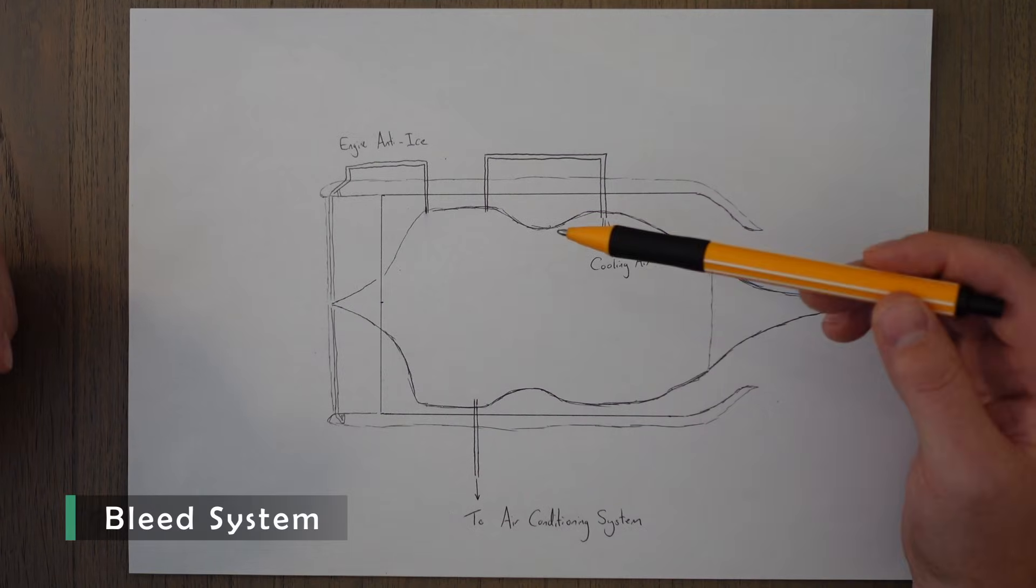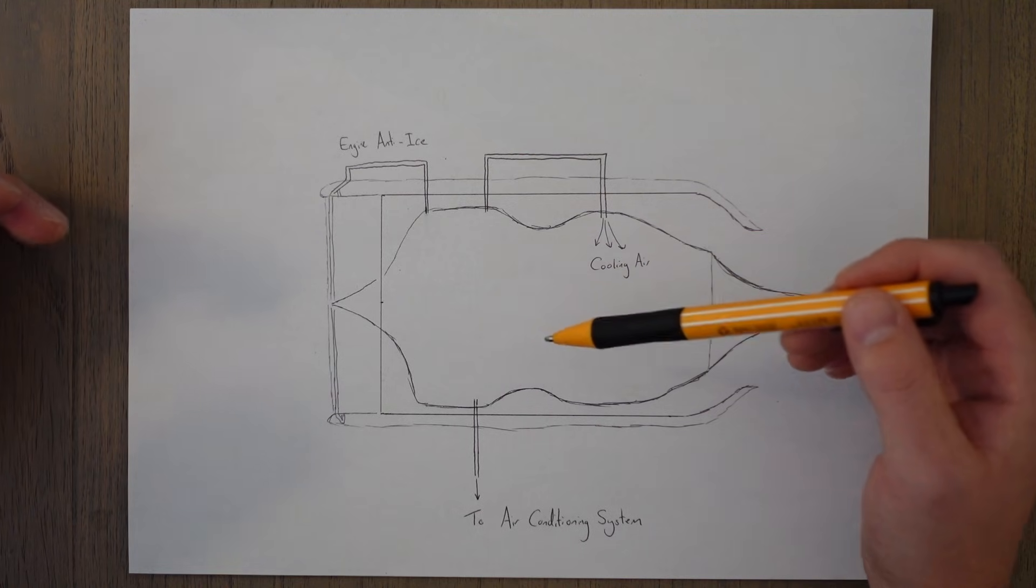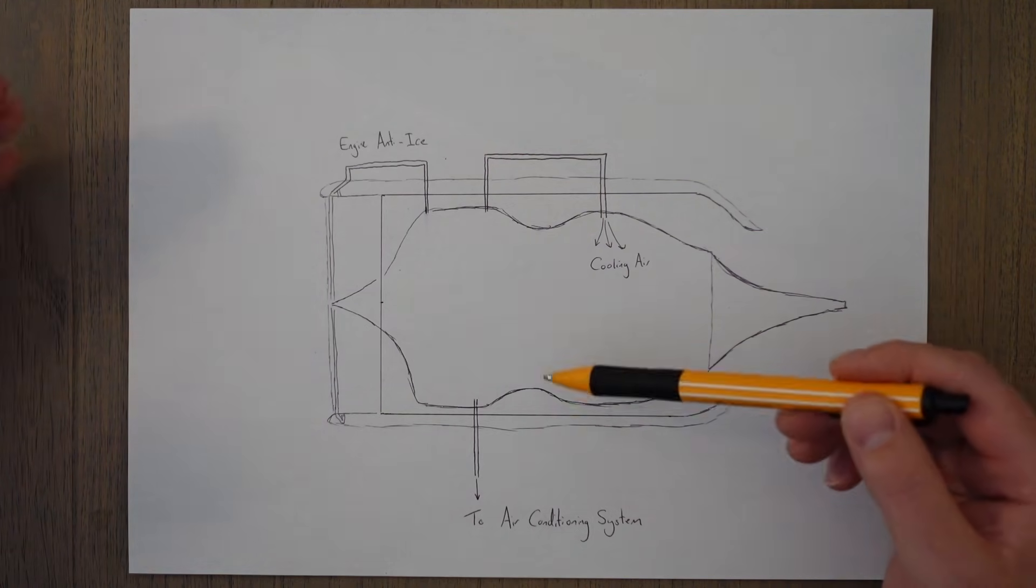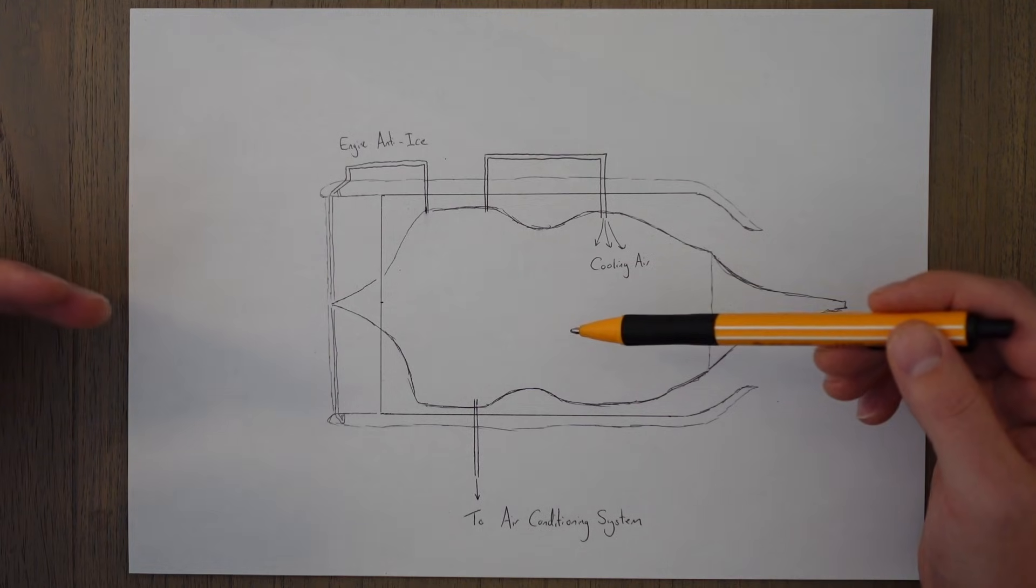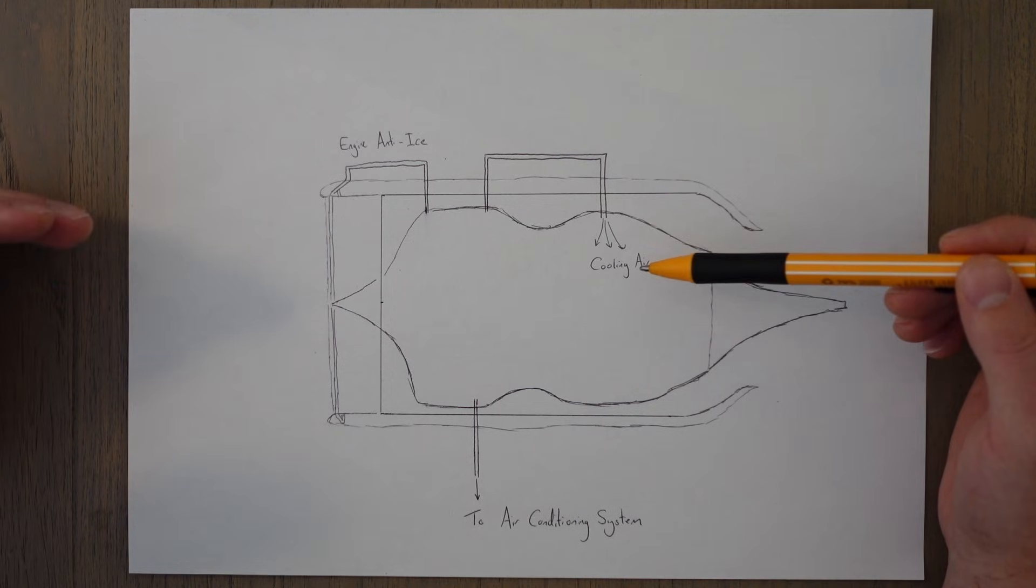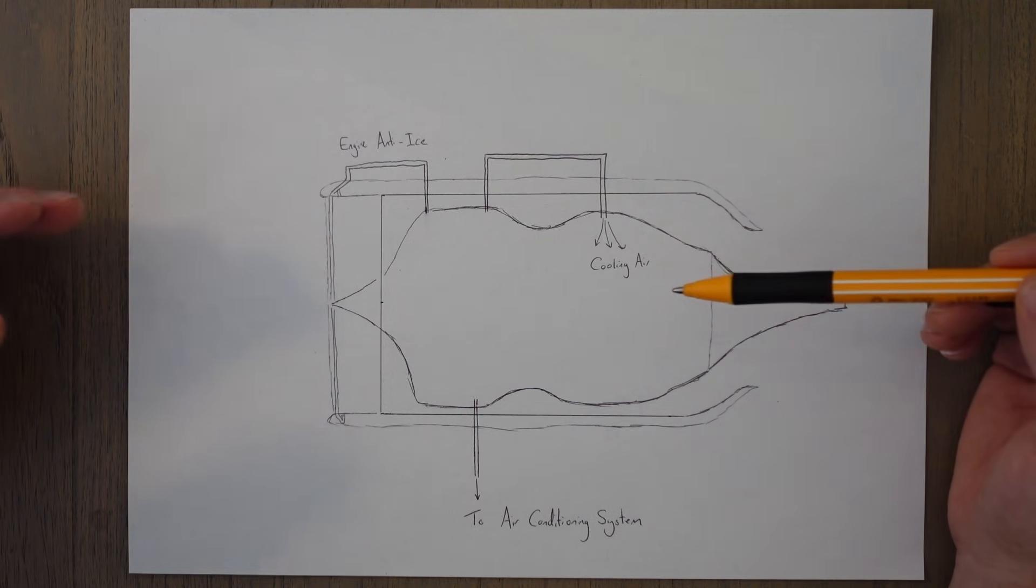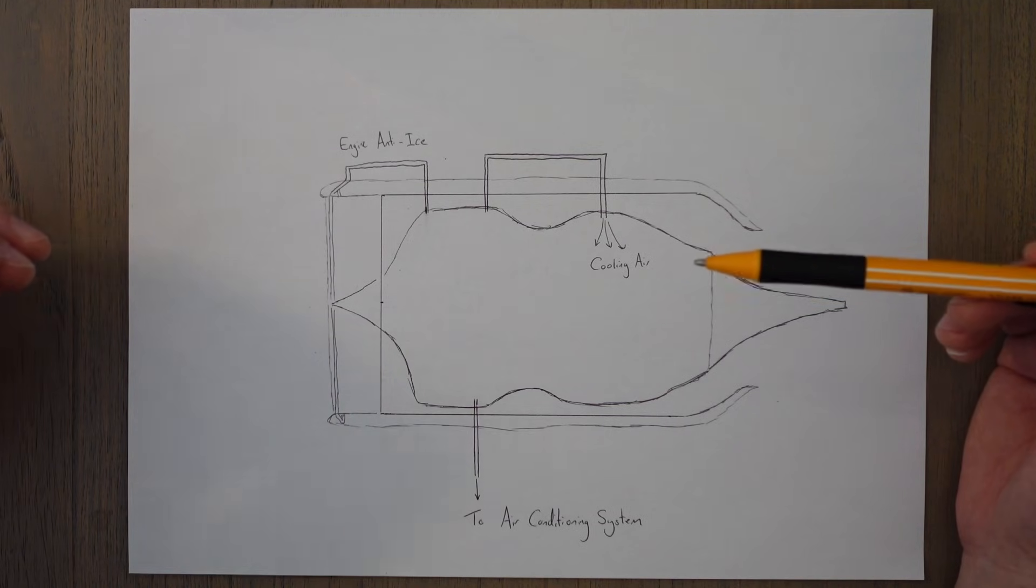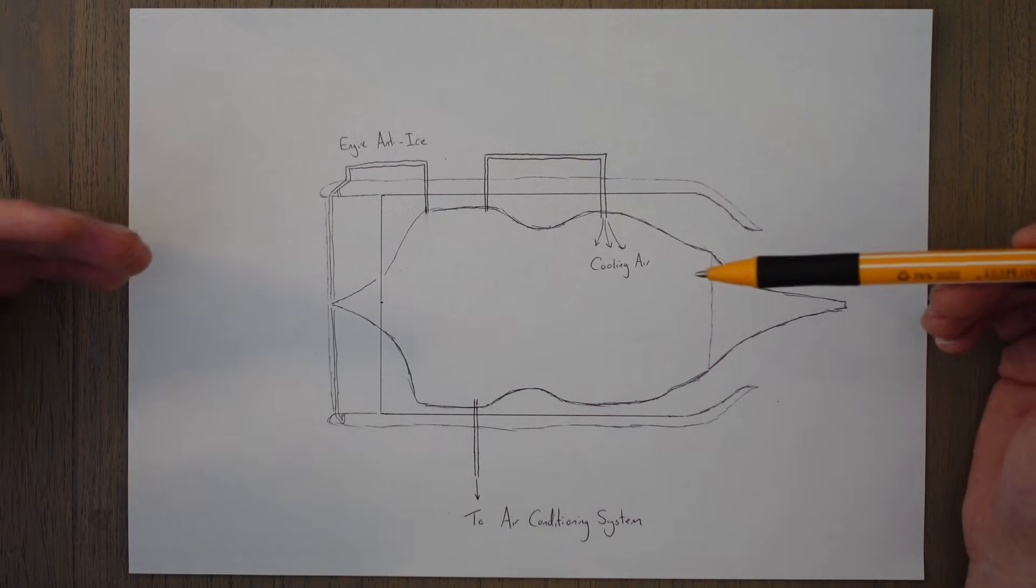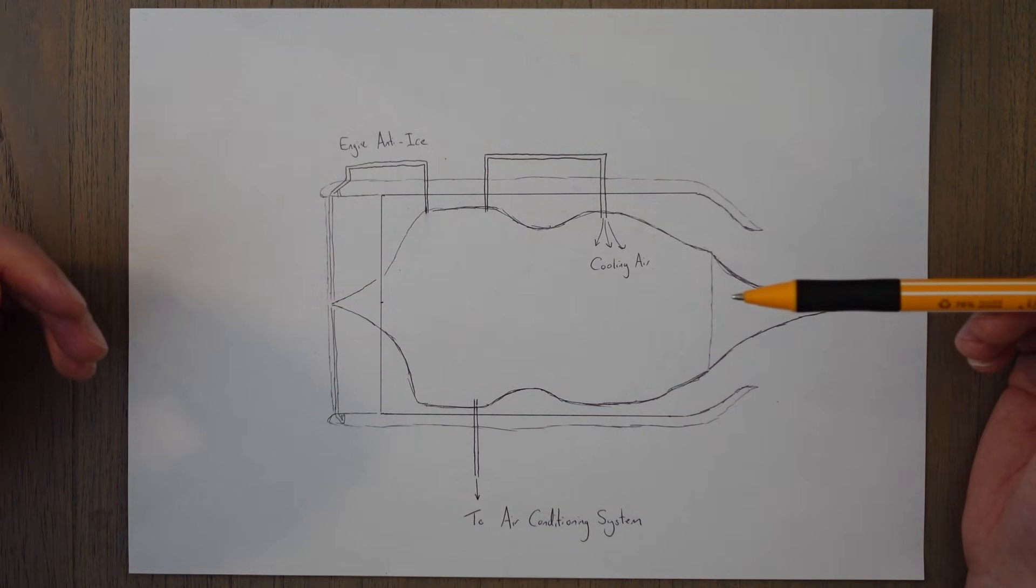The bleed system draws compressed air away from the various compressor stages of the engine for use in pressurizing the aircraft and providing air conditioning. It is also used in engine tasks such as helping to cool down the turbine blades by adding in cooler air to the hot exhaust gases. Bleed air is a very useful source of energy because it has hot, high pressure air that we can use to do work in some of the systems that we'll have a look at later on in this course.